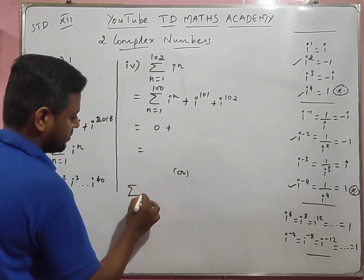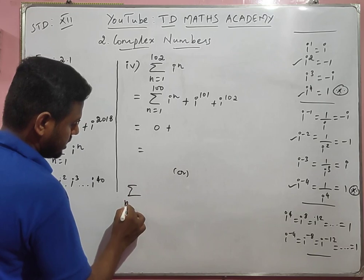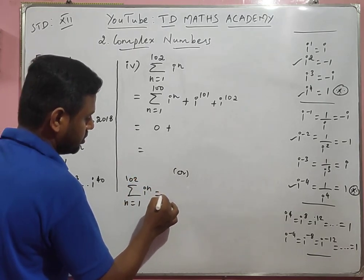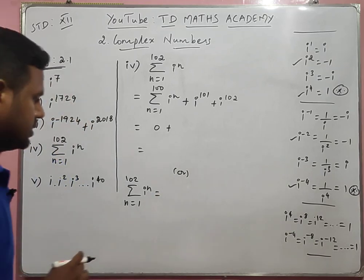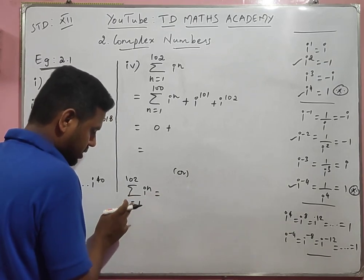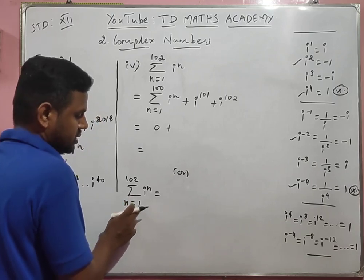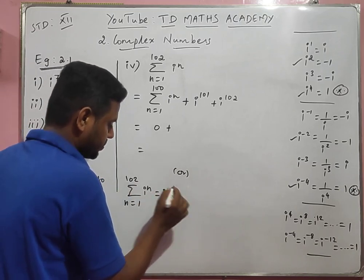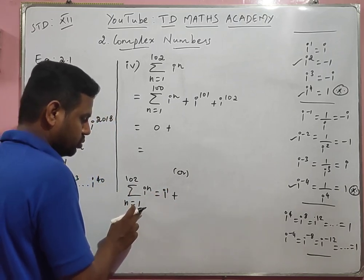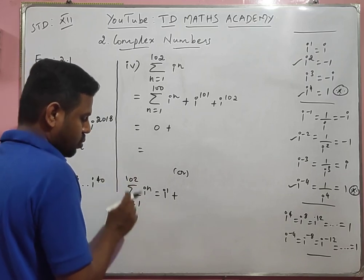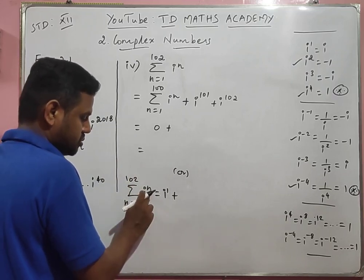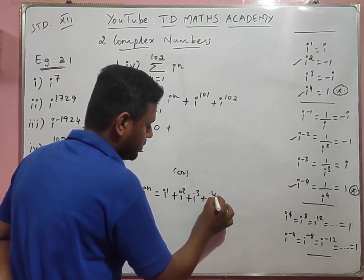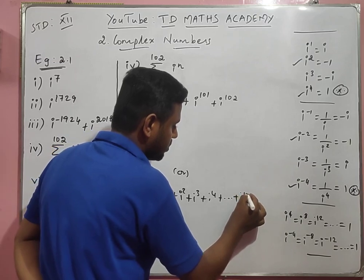The summation equals: substitute n = 1 to 102, giving i power 1 plus i power 2 plus i power 3 plus i power 4 plus ... plus i power 102.